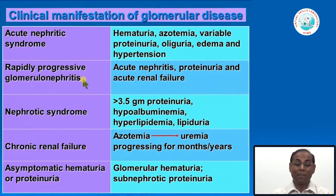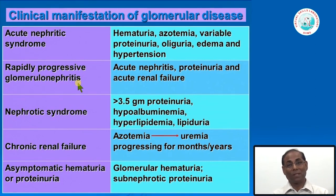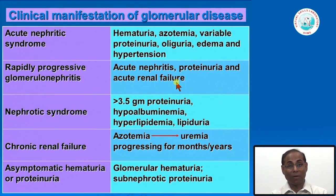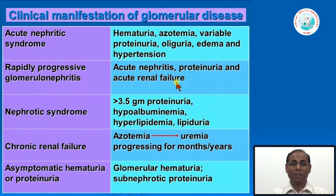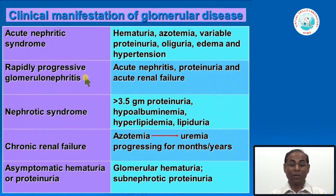Rapidly progressive glomerulonephritis (RPGN) is important to understand: it has a short history of a few days to weeks, presents with oliguria or anuria with almost no urine, and if there is urine there will be mild proteinuria and hematuria. This entity usually progresses very rapidly, causing acute renal failure, and is grouped under rapidly progressive glomerulonephritis.